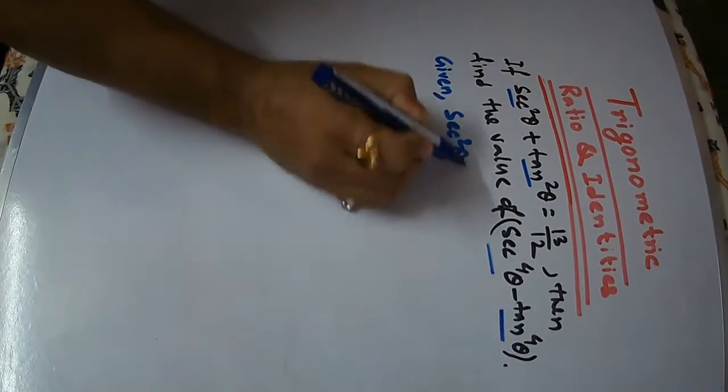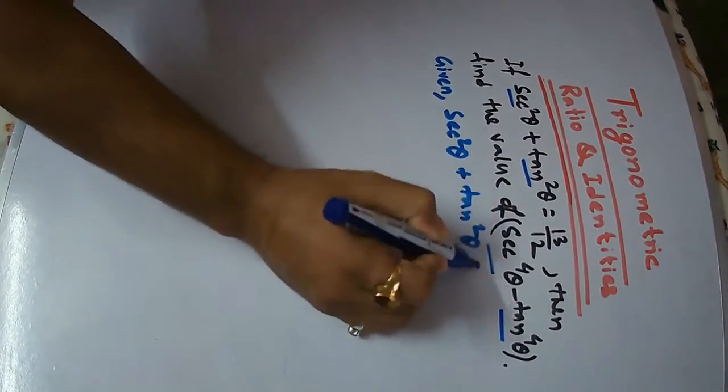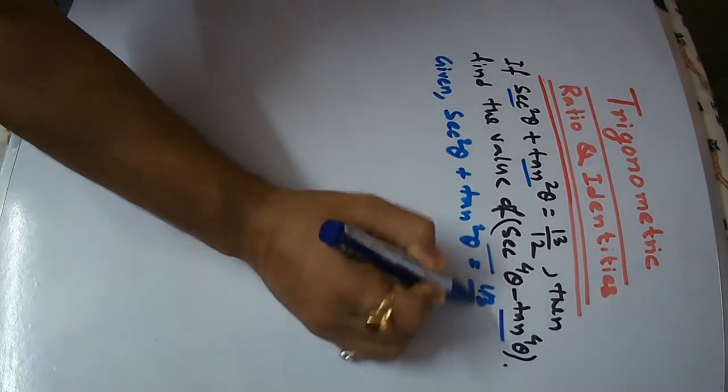Given: 6 square theta plus 10 square theta is equal to 13 by 12.